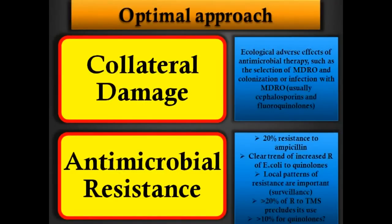A brief introduction. All these guidelines — especially regarding lower urinary tract infection, cystitis, and uncomplicated pyelonephritis — take into account two most important concepts: collateral damage and antimicrobial resistance, which drive the decision about which antimicrobial to recommend. Regarding collateral damage: what is it? It refers to ecological adverse effects of antimicrobial therapy, such as the selection of multidrug-resistant organisms or colonization.